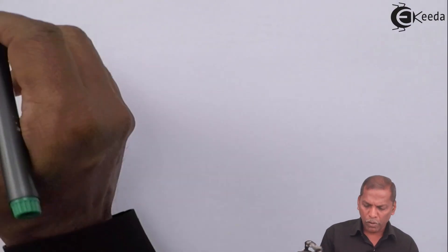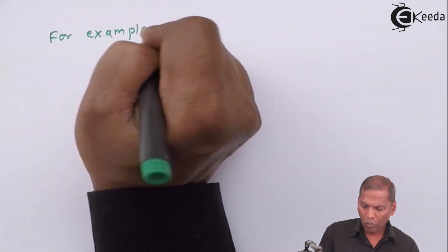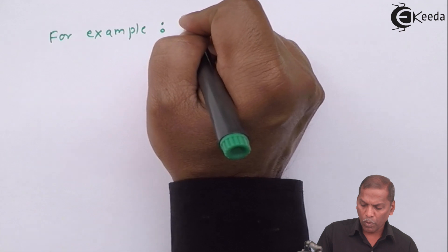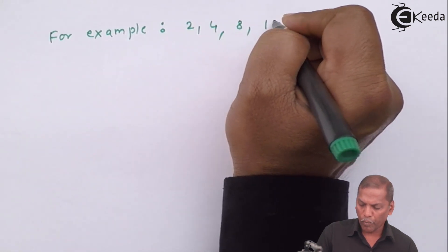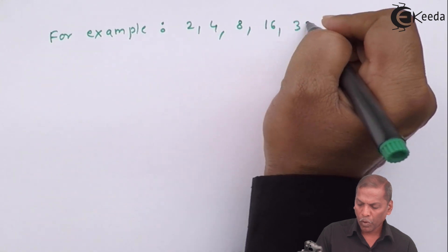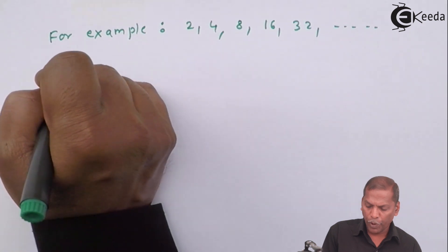For example, the numbers 2, 4, 8, 16, 32, going on, are in GP.